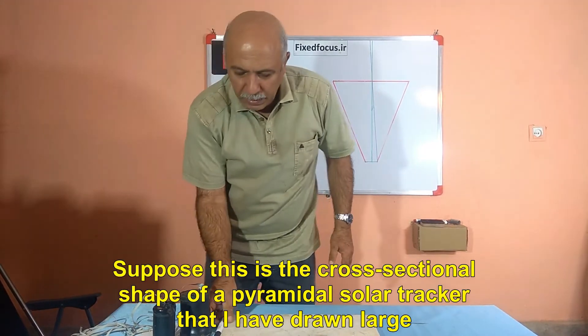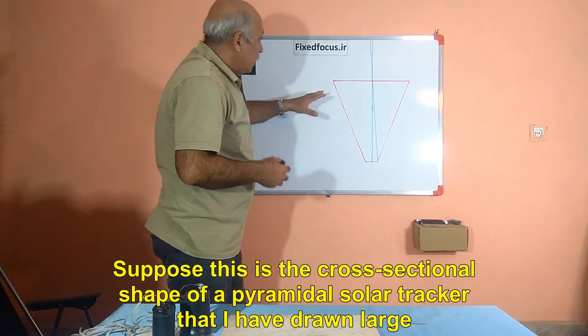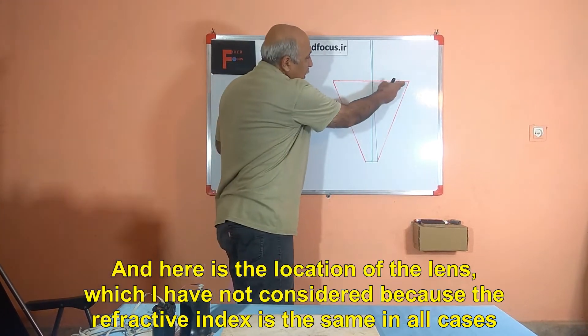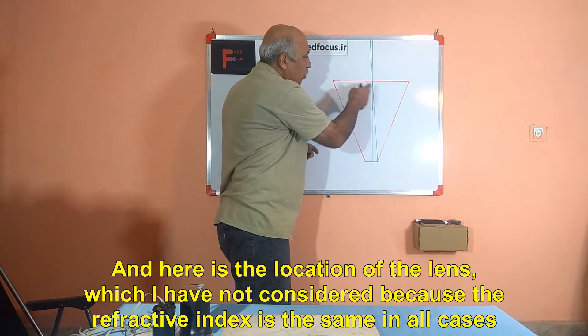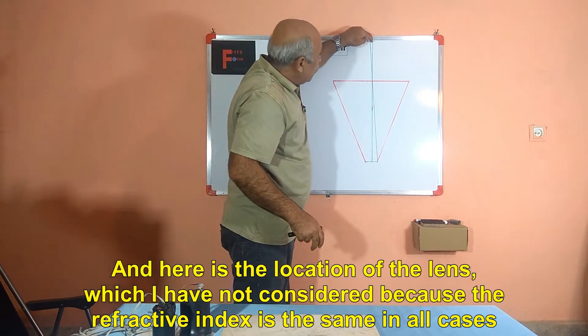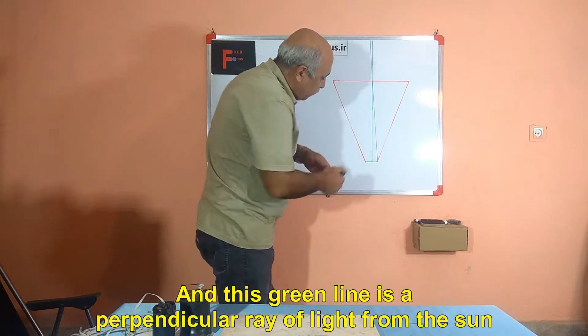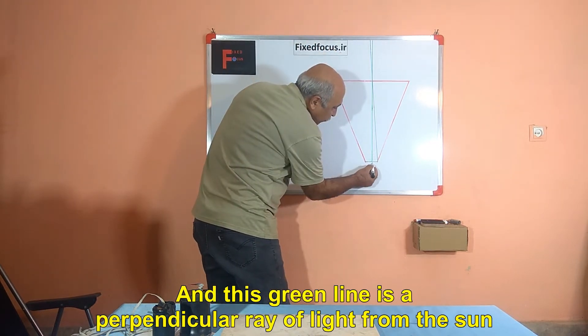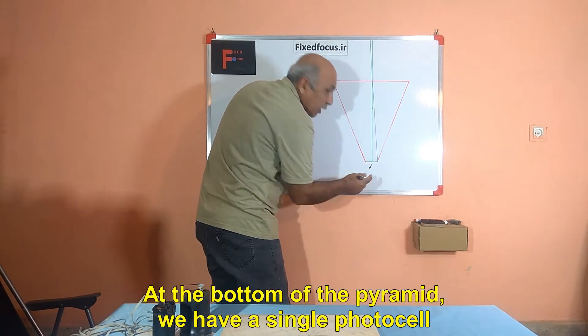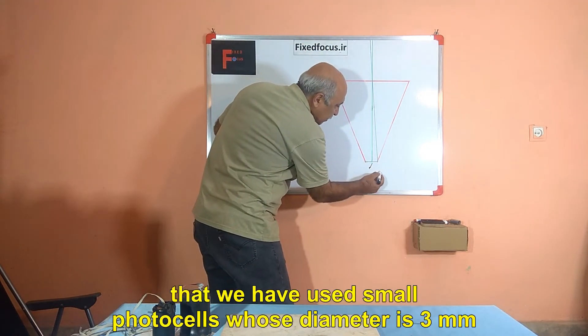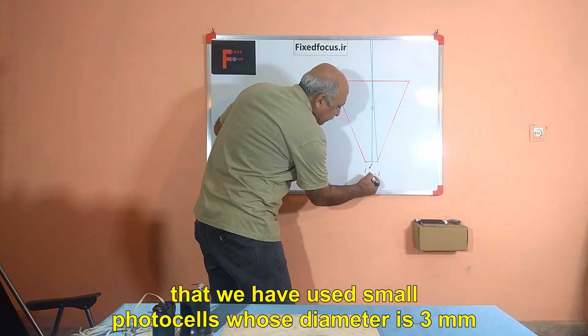Suppose this is the cross-sectional shape of a pyramidal solar tracker that I have drawn large. And here is the location of the lens, which I have not considered because the refractive index is the same in all cases. And this green line is a perpendicular ray of light from the sun. At the bottom of the pyramid, we have a single photocell that we have used small photocells whose diameter is 3 millimeters.